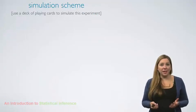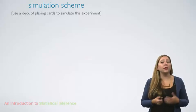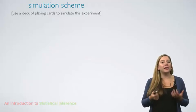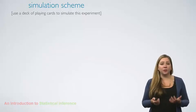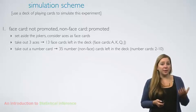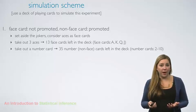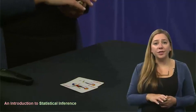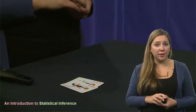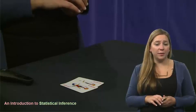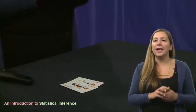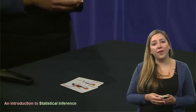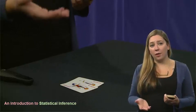If you have a deck of playing cards handy, you can actually conduct the simulation yourself. Remember, the objective is to conduct a simulation under the assumption that the null hypothesis is true — in other words, assuming there is no gender discrimination and that differences in promotion rates that are observed are simply due to chance. First, we're going to let a face card represent a not-promoted file and a non-face card represent a promoted file. We're going to start by setting aside the jokers. There are 52 cards in a deck, however only 48 files in our experiment.